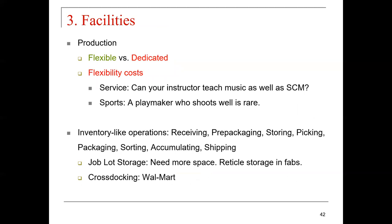Facilities, in terms of production — that's where the product is developed, manufactured, and then shipped. We have production that is flexible versus dedicated. Flexible costs are about service versatility. For example, can an instructor teach music as well as supply chain management? If so, that person can teach multiple courses. In terms of sports, a playmaker who shoots well is rare, but if you have a playmaker that can also shoot well, you have flexibility for your basketball team.